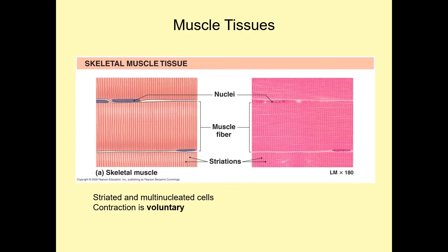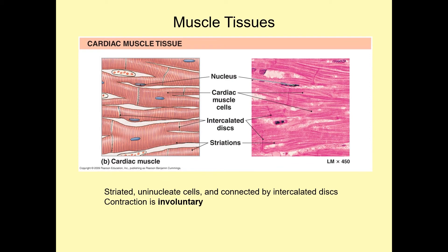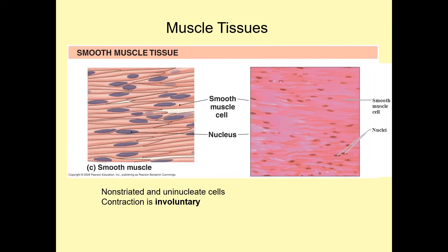There are three different kinds of muscle tissue. First is skeletal muscle — you can see the striations going across the cells. These cells are voluntary, meaning you can consciously control them. Next, we have cardiac muscle tissue, found in the heart. We can differentiate it from skeletal muscle because it has intercalated discs that divide the cells, and the cells are much smaller. Cardiac muscles are involuntary. Then we have smooth muscle, which is involuntary, usually found in internal organs, and does not have striations.